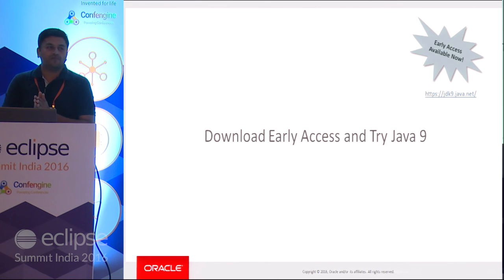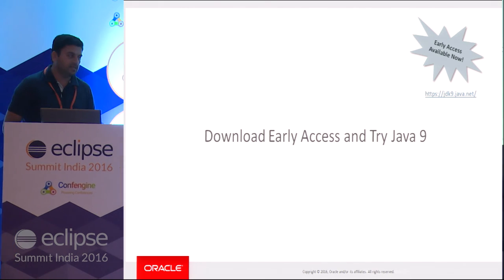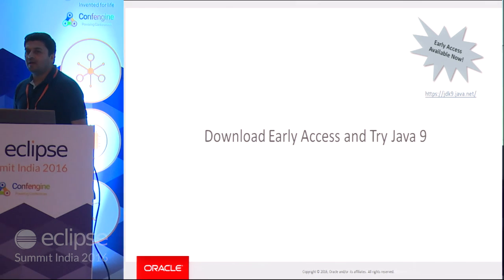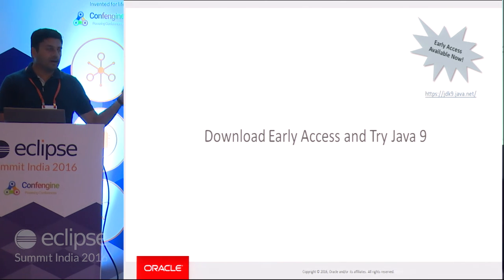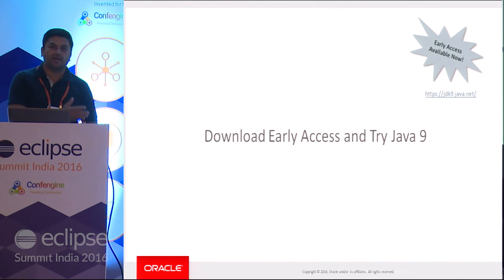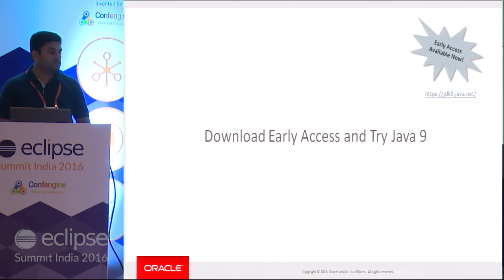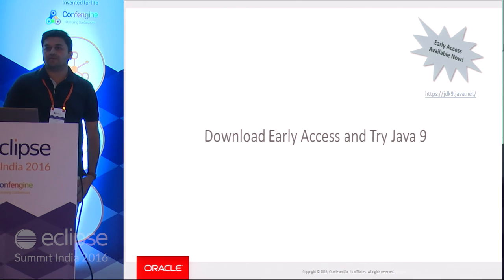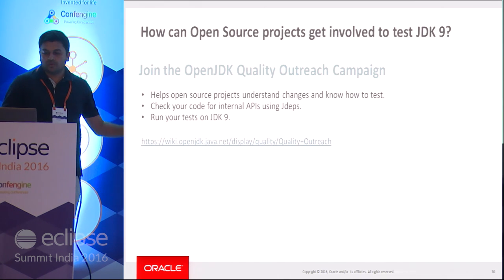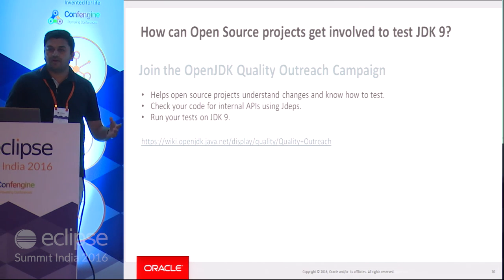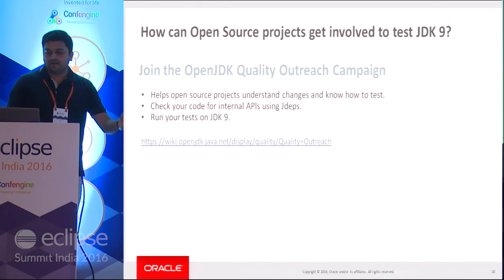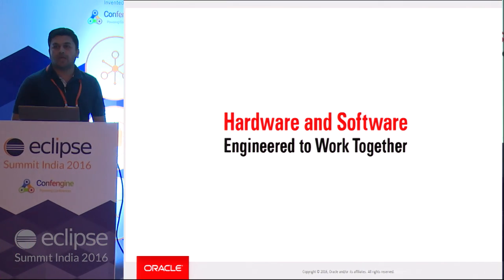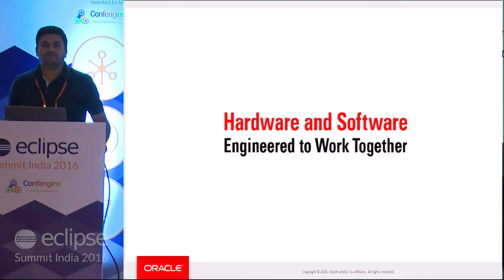What's next is simple: go to jdk9.java.net, grab the early access build — build 132 is now available. Try out all the completed features. Your feedback helps the community so we can improve the product before the March 23rd, 2017 general availability release. There are also quality outreach programs running so you can help move the ecosystem forward. Thank you for attending — just two minutes over time!